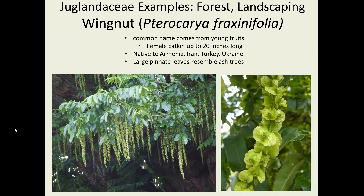An interesting tree we don't see much in the United States is Pterocarya fraxinifolia, called wingnut. That name comes from the funny little wings on the fruits as they develop. It has a very long catkin, up to 20 inches. There are several different genera, all of which have different types of little wings that make them interesting for landscaping.